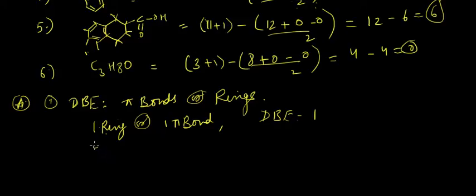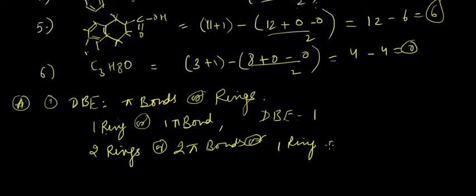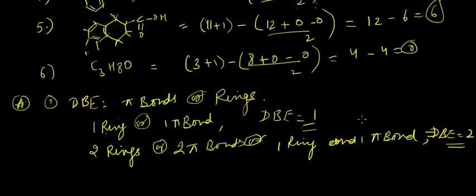And if the compound has two rings or two pi bonds or one ring and one pi bond, then the DBE of this compound is two. Just remember this fact: the DBE of a compound is dependent on how many pi bonds or rings are there in that given compound.